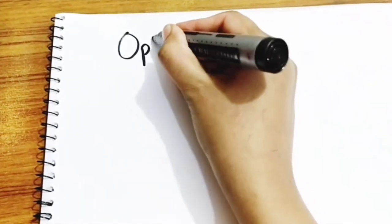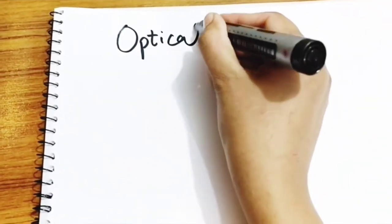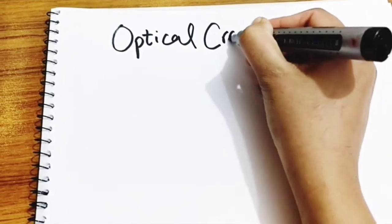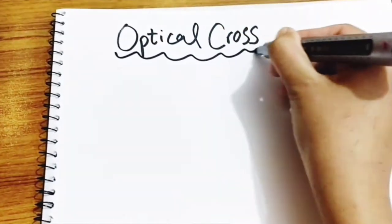Hey guys, I will explain about optical cross. Optical cross is a simple diagrammatic representation of two principal meridians of curvature.